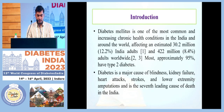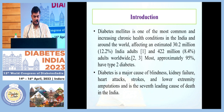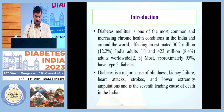Introduction. Diabetes mellitus is one of the most common and increasing chronic health conditions in India and around the world, affecting an estimated 30.2 million (12.2 percent) Indian adults and 422 million (8.4 percent) adults worldwide. Most — approximately 95 percent — have type 2 diabetes.